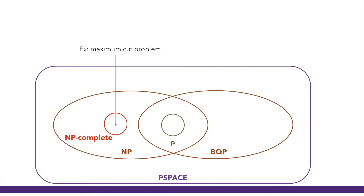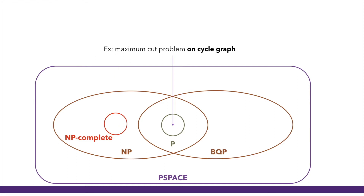MaxCut is a paradigmatic problem for quantum optimization, mostly because of its relationship with Ising spin glasses, which are well-studied in physics. But it is NP-complete only in the worst case — that's what NP-completeness means. The asymptotic complexity of a problem is defined as worst-case asymptotic complexity. However, if you look at a particular instance, for example maximum cut on a cycle graph, this problem is no longer NP-complete — it's actually quite easy, with a polynomial-time algorithm.